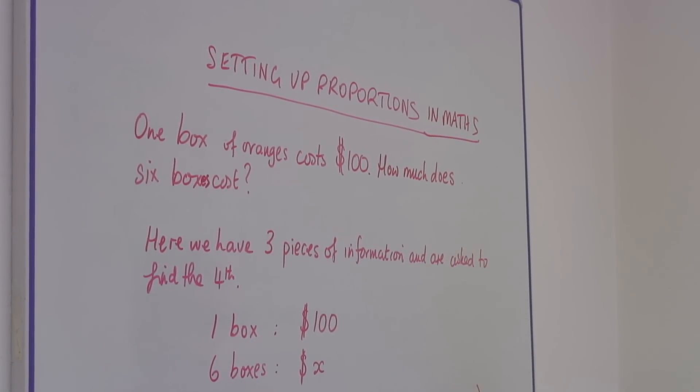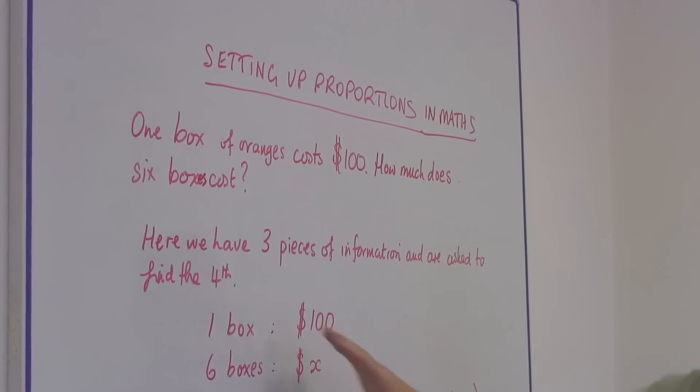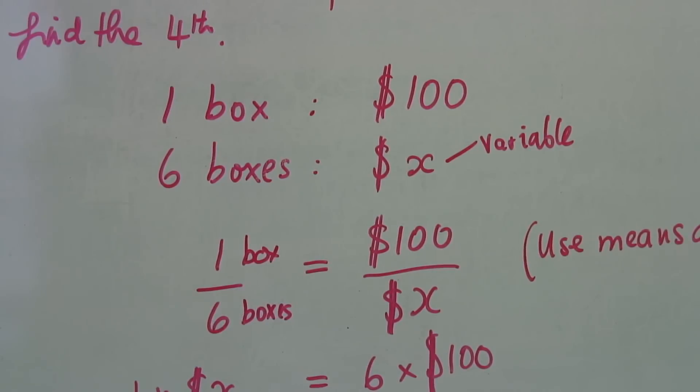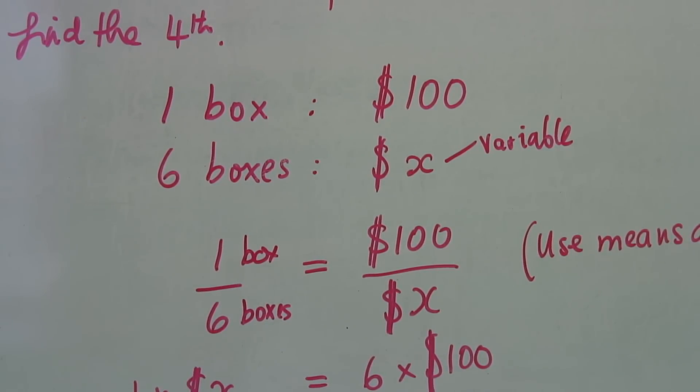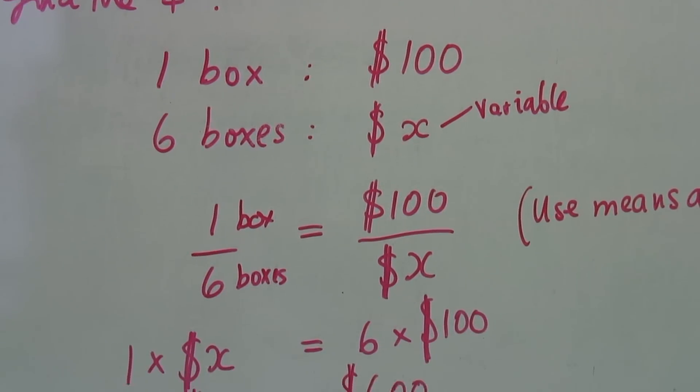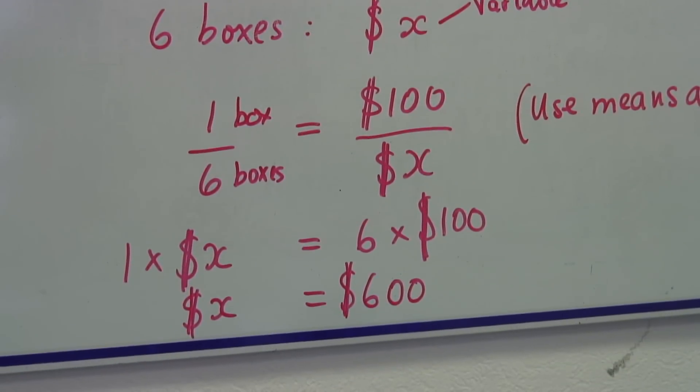So we need to set up a proportion. If we write down here simply one box, $100. Six boxes, x dollars. X of course is a variable.